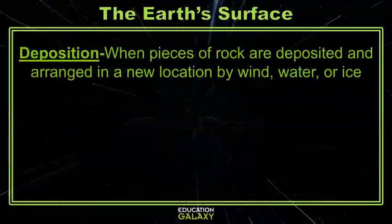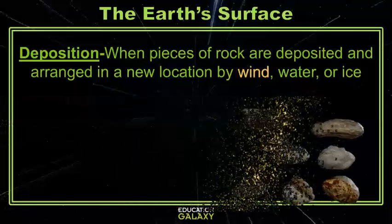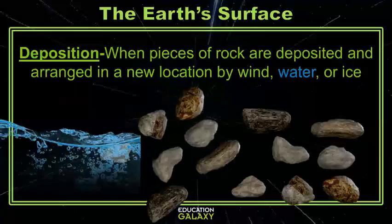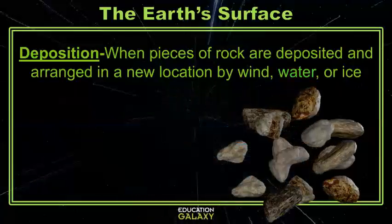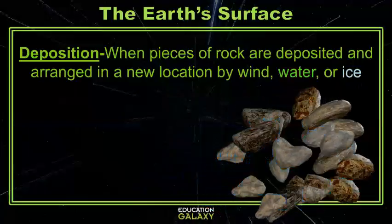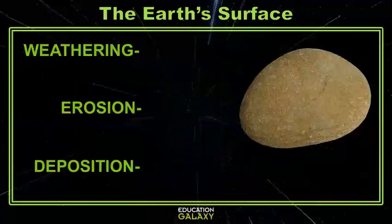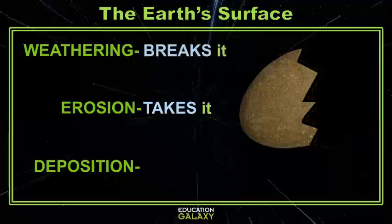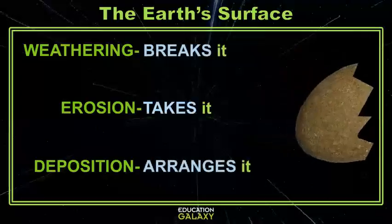Deposition happens when wind, water, or ice deposit or arrange the broken pieces of rock. You can have deposition caused by wind leaving pieces of rock like sand dunes forming, or you can have water leaving pieces of rock, and we can even have glaciers leaving pieces of rock behind in their trail. An easy way to remember which one is which is that weathering breaks it, erosion takes it, and deposition arranges or deposits and leaves it.